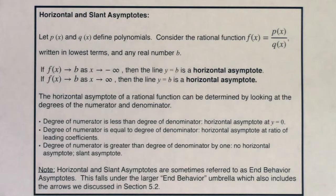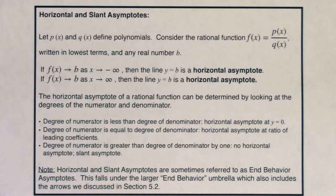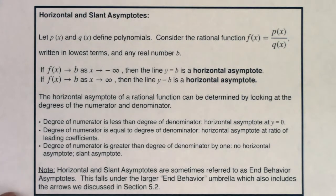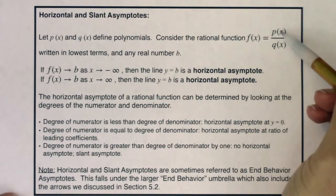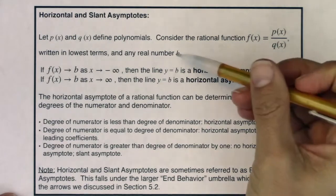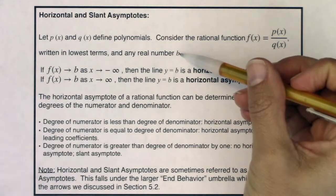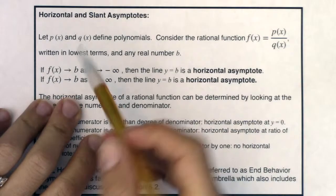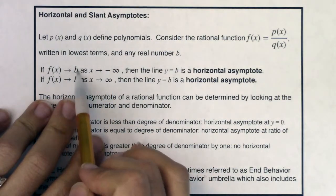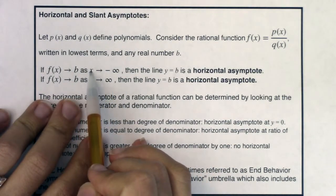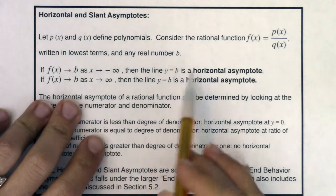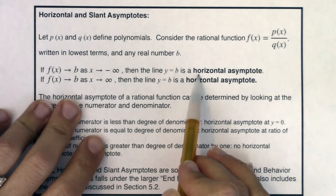Hey, Math 31. Welcome to this not at all intimidating box about horizontal and slant asymptotes. I'm going to read all of this to you and then we're going to try and unpack it in example three. We've got our rational function p over q and we've got any real number, we're going to call it b this time. If your function is headed to b, your y values are headed to b as x goes to negative infinity, then y equals b is a horizontal asymptote.